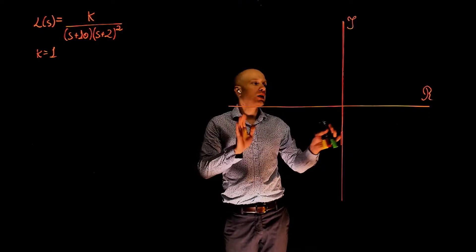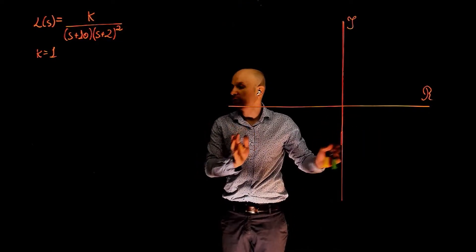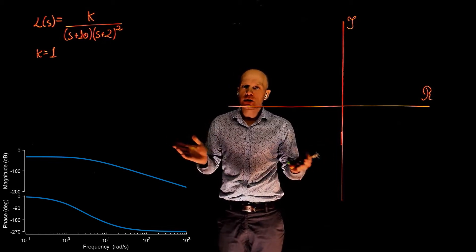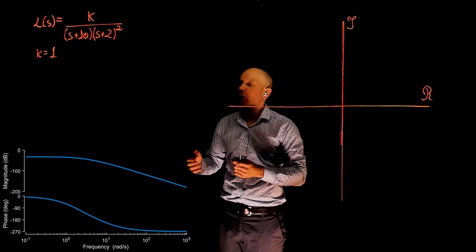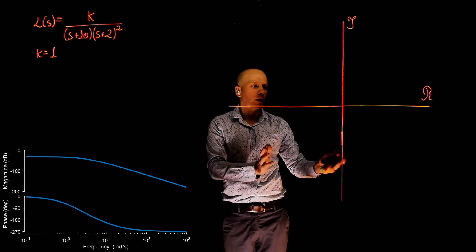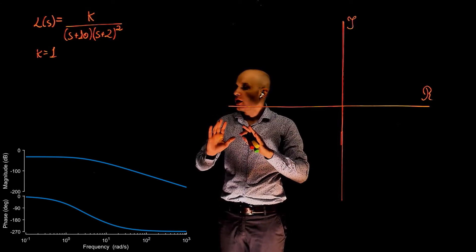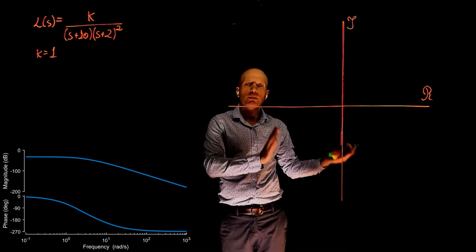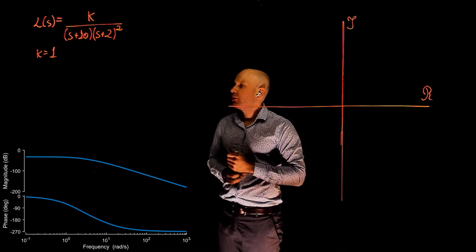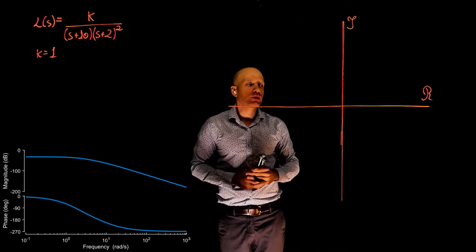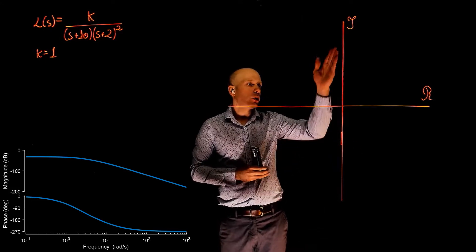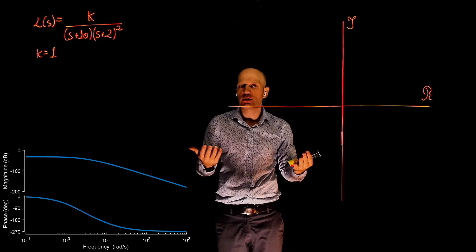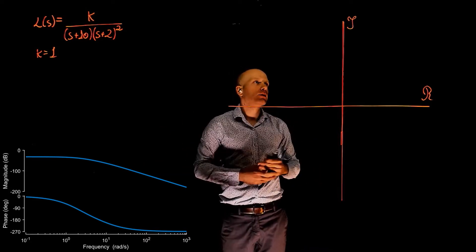In this exercise, we are going to attempt to come up with a Nyquist plot based on the Bode plot. You probably noticed a pattern in our previous exercises where, in order to draw the Nyquist plot, we had to identify the magnitude and the phase of the transfer function at some strategic points — the points where we cross the imaginary axis and the real axis, and of course for the value of frequency at zero and infinity.